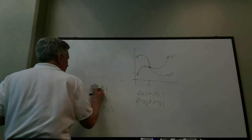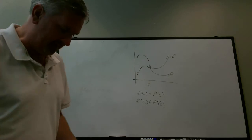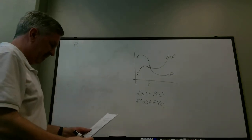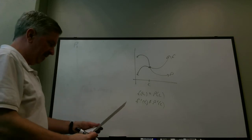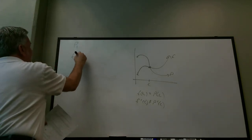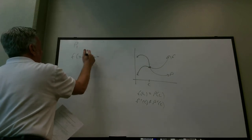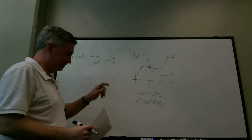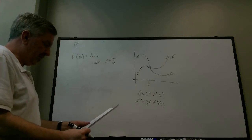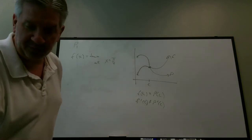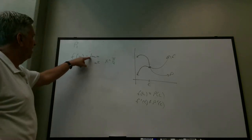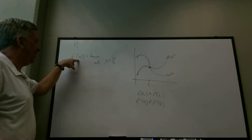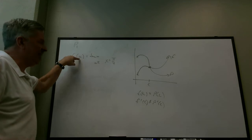As a computational example, find a first-degree polynomial function p₁ — linear — whose value and slope agree with f(x) = tan(x) at x = π/4. So we want p₁(π/4) = f(π/4) and p₁′(π/4) = f′(π/4). We're trying to estimate the tangent function with a first-degree polynomial near x = π/4.